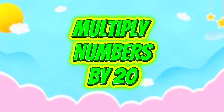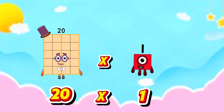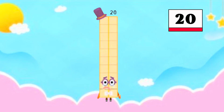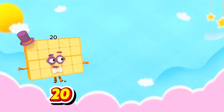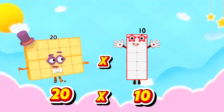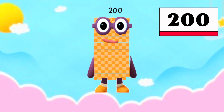Let's multiply numbers by 20. 20 times 1 is equals to 20. 20 times 10 is equals to 200.